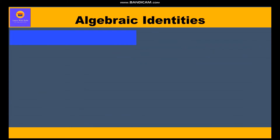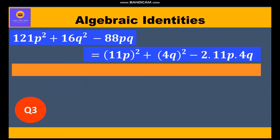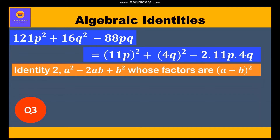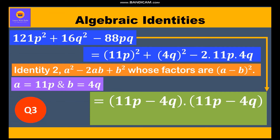Question 3: Factorize 121p² + 16q² - 88pq. Writing in the form of an identity: (11p)² + (4q)² - 2·(11p)·(4q). This matches identity two, where a = 11p and b = 4q. Therefore the factors are (11p - 4q)(11p - 4q) = (11p - 4q)².